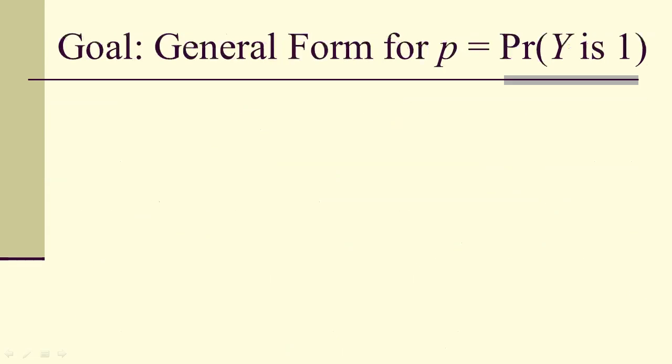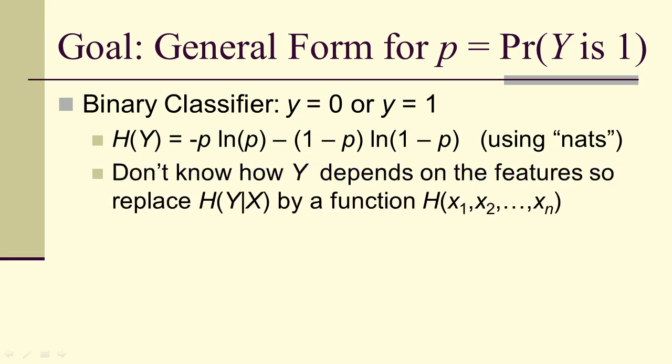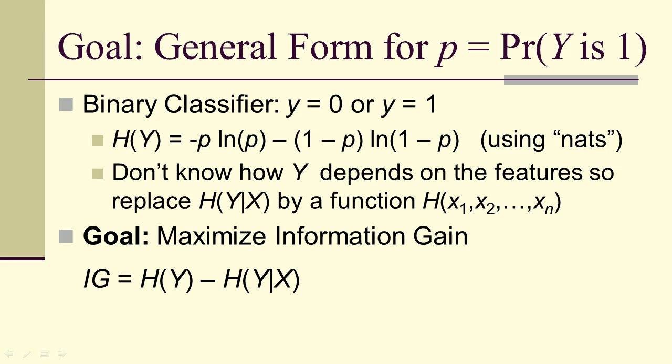We just want to get the general form for right now. So P here is going to be the probability that Y is equal to 1. If we have a binary classifier, then our entropy is negative P log P minus the quantity 1 minus P log 1 minus P. And we're using nats here, the natural logarithm. If you want bits, just divide everything by log 2. We don't know how Y depends on the features, so we're just going to replace the conditional entropy by some completely unknown function H, that's just going to stand in for the function we don't know. Our goal is to maximize information gain.